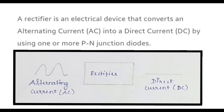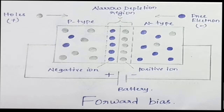A rectifier is an electrical device that takes AC as input and gives DC as output. The electric current is allowed to flow in only one direction. There are two conditions: forward bias and reverse bias.